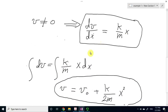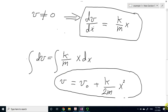I'm going to move dx to the other side and integrate both sides. It's an easy equation, and the answer is v equals the constant of integration, and you can check that it is v0, the initial velocity, plus the integration of this factor, which is k over 2m x squared.